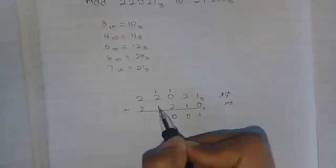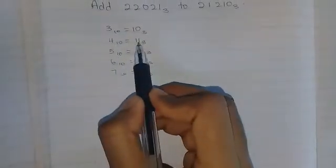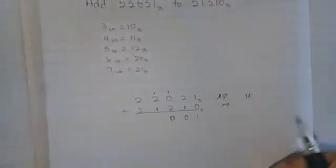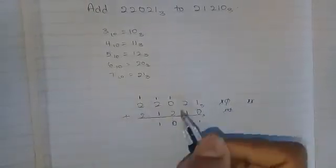2 plus 1 plus 1, that is 4. And 4 base 10 is equal to 11 base 3. Take the 1, put it here. And take the other 1 and put it here.